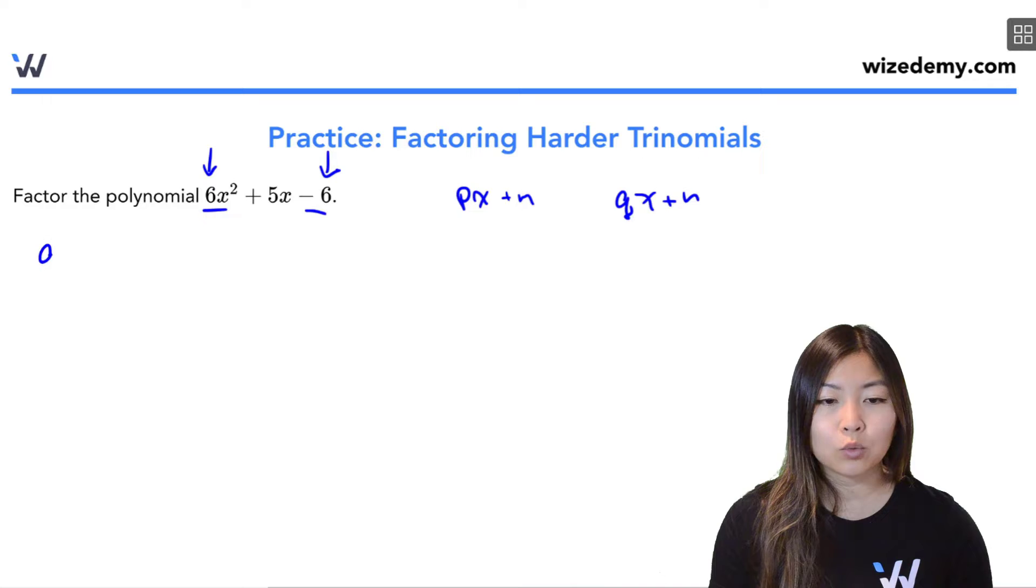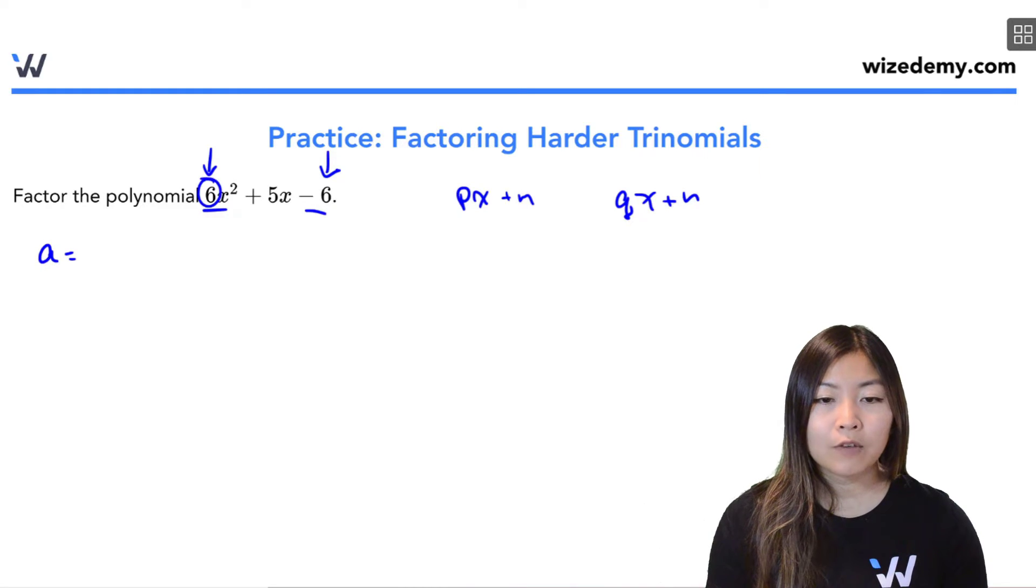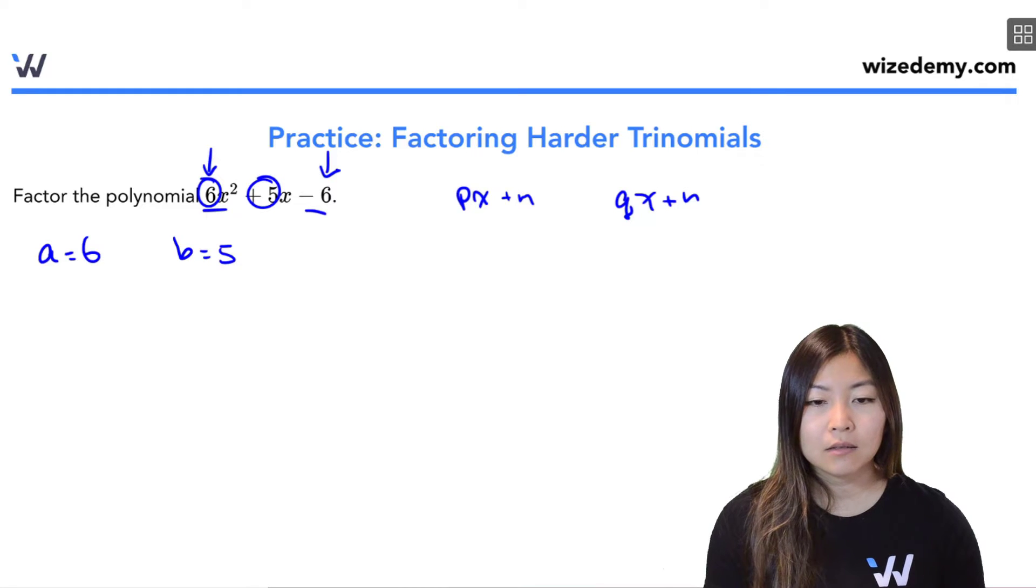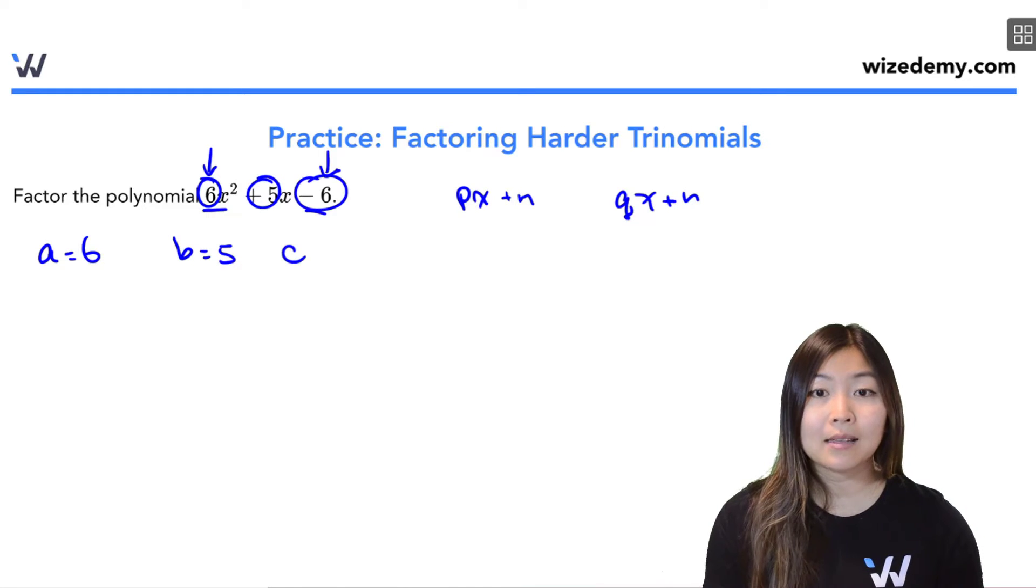So first thing I need to do is write out my a, b, and c. a is the number in front of x squared. b is the number that's in front of our x, and c is the number by itself, the constant.